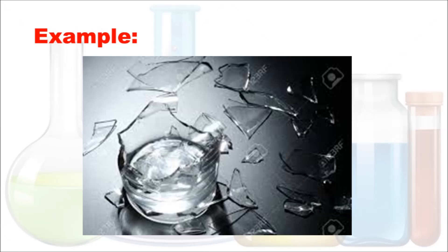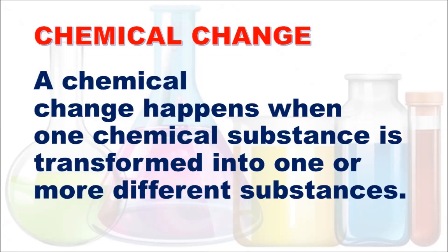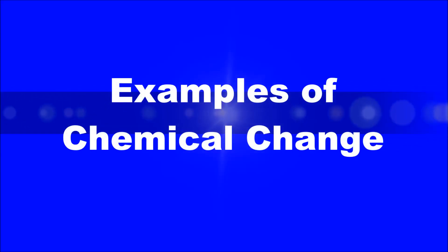Now, another type of change is what we call chemical change. When we say chemical change, a change that happens when one chemical substance is transformed into one or more different substances. So normally you produce a new substance. I will give some examples of chemical change. So here are the examples of chemical change.